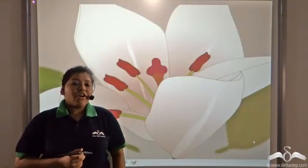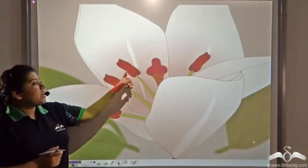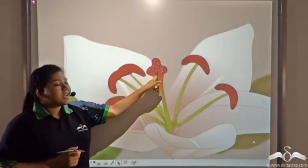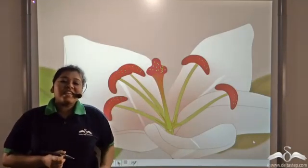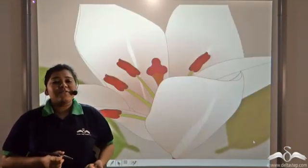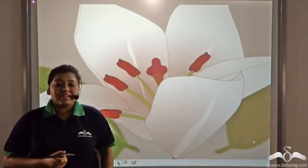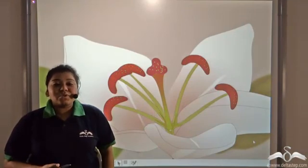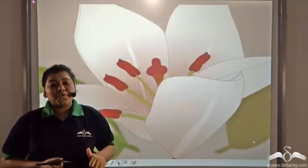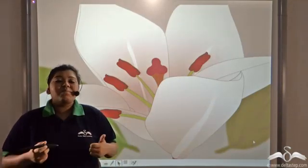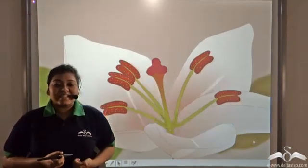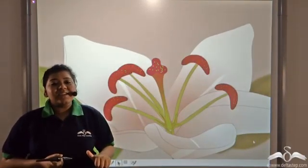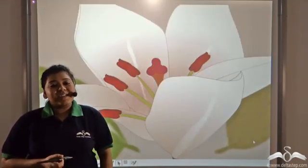The transfer of pollen grains from the anther to the stigma is known as pollination. Now pollination is not enough for reproduction of a new plant. It has to be followed by a process in which there is fusion of pollen grains with the ovule, and this process is known as fertilization. So pollination followed by fertilization brings about reproduction in a plant.